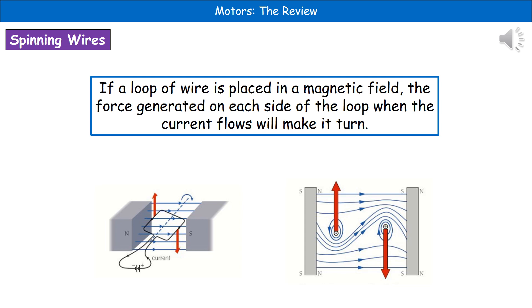If we actually take a loop of wire and place it in a magnetic field, then what we see is that the force generated on each side is in the opposite direction. And therefore, that's going to actually make that loop of wire turn when it's got the current flowing through it.